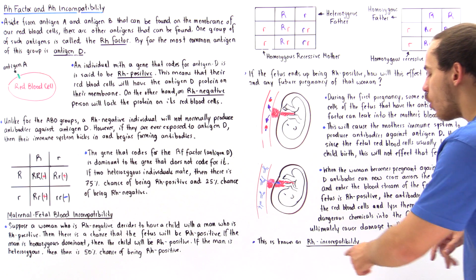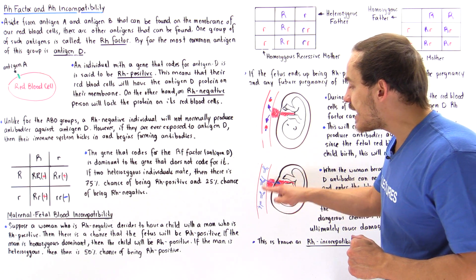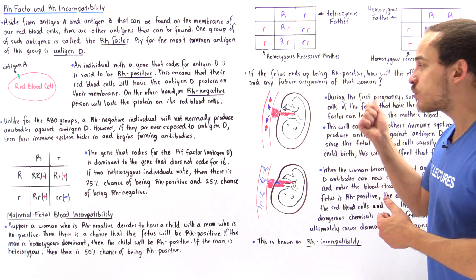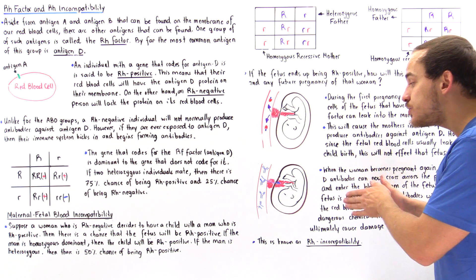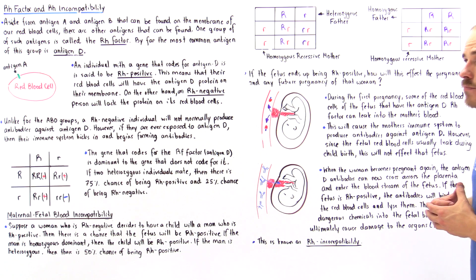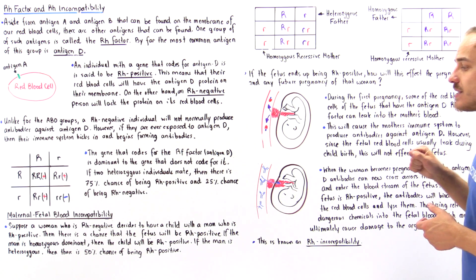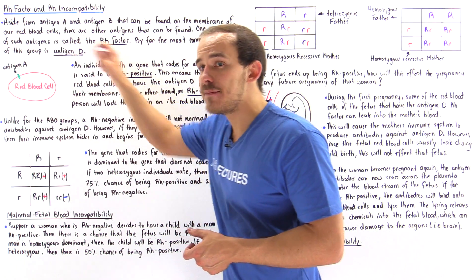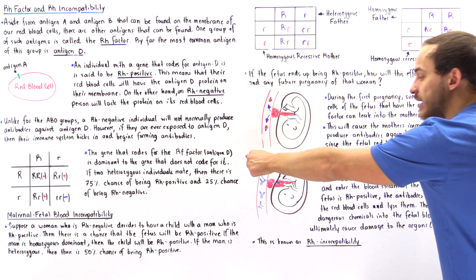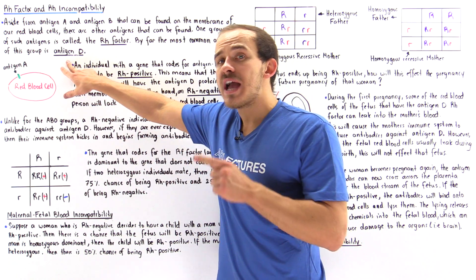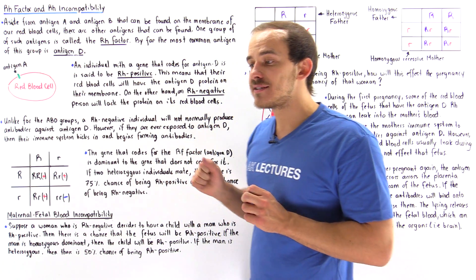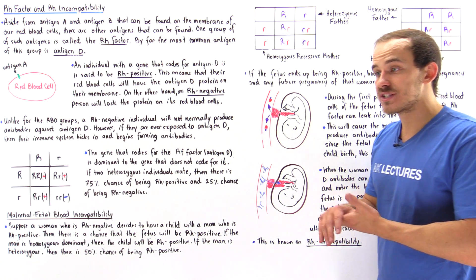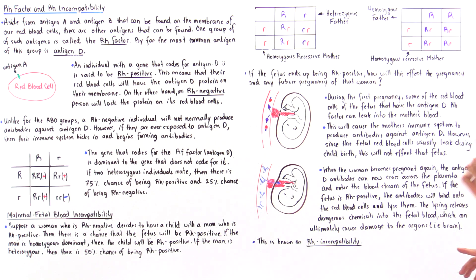Now we have something called Rh incompatibility. The antibodies produced as a result of that first pregnancy are floating around in the mother's bloodstream, and because they're small enough, they can pass across the placental membrane into the bloodstream of the fetus. The fetus is Rh positive and contains red blood cells with antigen D. When these antibodies travel through the placenta into the fetal bloodstream, they will bind onto the antigen D proteins on the fetal red blood cells, and once bound, they will lyse — destroy — those cells. When the cells lyse, they release dangerous chemicals into the bloodstream of the fetus that can damage its organs, including the brain.